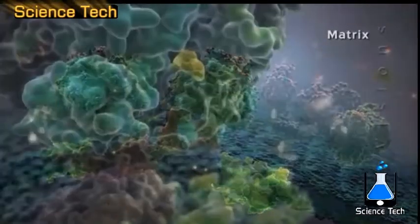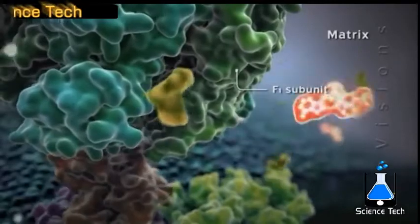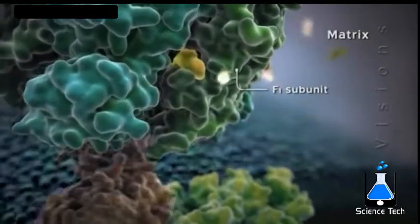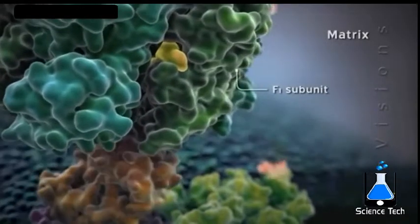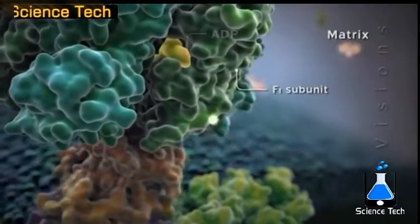The rotating shaft sequentially contacts the three catalytic subunits of the ATP synthase F1 complex, altering the subunits' affinity for ATP and ADP, and catalyzing the synthesis and subsequent release of ATP.